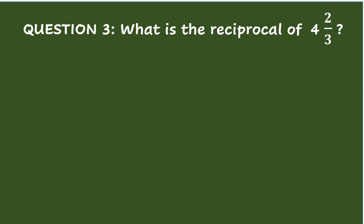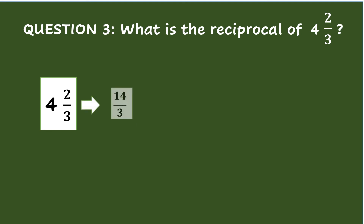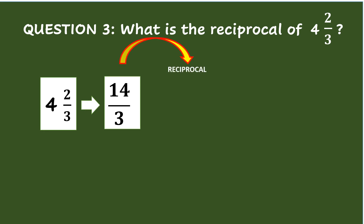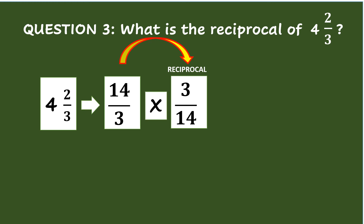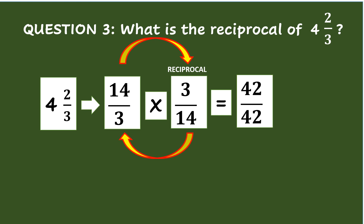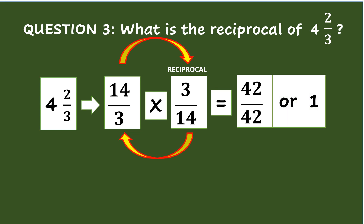Question 3. What is the reciprocal of 4 and 2/3? To get the reciprocal of a mixed number like 4 and 2/3, the first step is to change the mixed number to an improper fraction. So, 4 and 2/3 will be equal to 14/3. Then, invert the fraction 14/3 to 3/14 to get its reciprocal. Remember that when a fraction is multiplied by its reciprocal, the product is 1. Thus, multiplying the numerators 14 times 3 equals 42, and the denominators 3 times 14 equals 42. So, 14/3 times 3/14 equals 42/42, or simplifying it is 1.